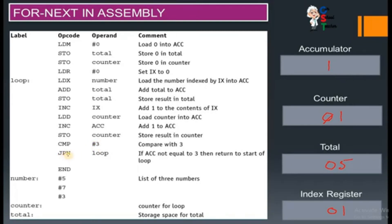After the comparison, the next instruction is jump if not equal to loop. The result of the comparison is not equal, so the program control transfers back to the loop label. Now, load X number again — the index register currently holds one, so one is added to the address of number, moving to the next element. From that address, seven is picked and loaded into the accumulator.